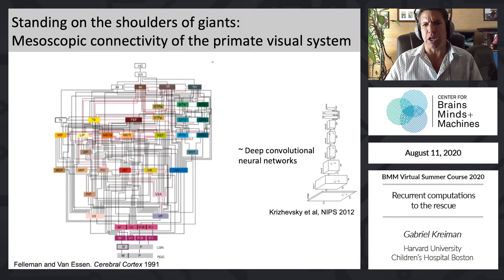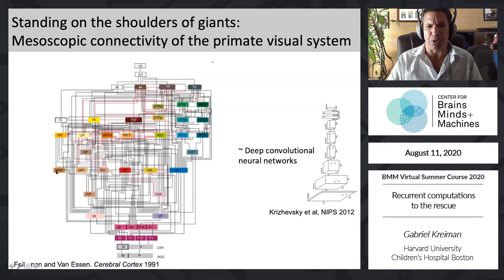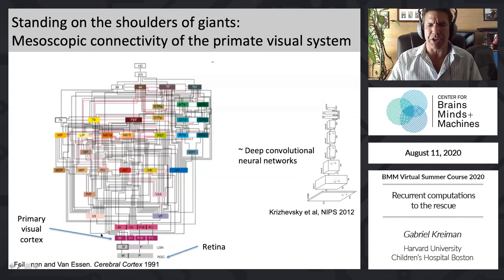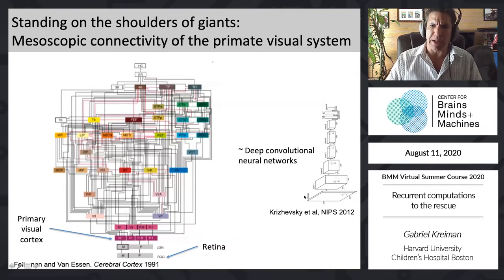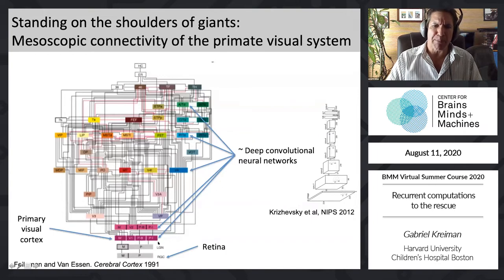We're guided by decades of work on the neural anatomy of the visual system. This is the mesoscopic diagram of connectivity in the macaque monkey ventral visual system — each box encompasses millions of neurons. Starting from the retina and retinal ganglion cells, through primary visual cortex, we have tens of different brain areas devoted to processing visual information. Deep convolutional neural networks can be coarsely mapped to areas like V1, V2, V4 along the ventral visual stream.